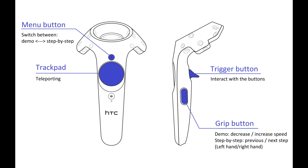The Grip buttons, during the demo, can be used to adjust the speed of the demonstration. When the demo is paused, you can set the pace yourself using the step-by-step feature, which also allows stepping backwards.